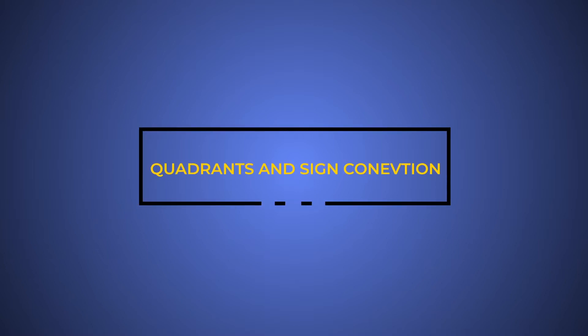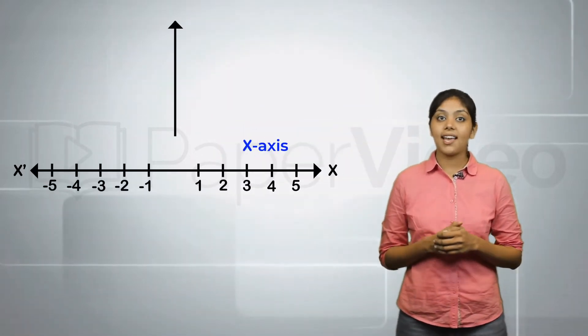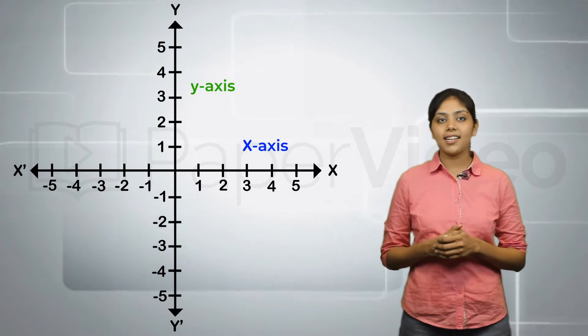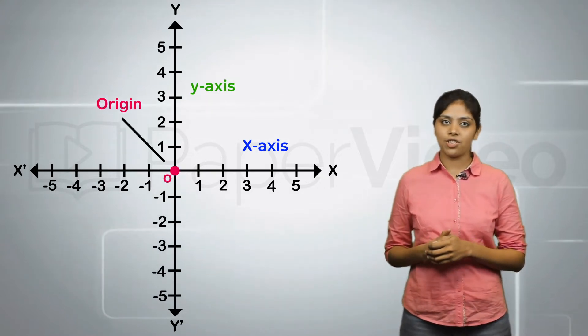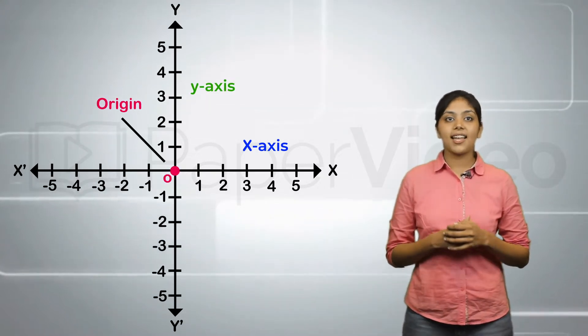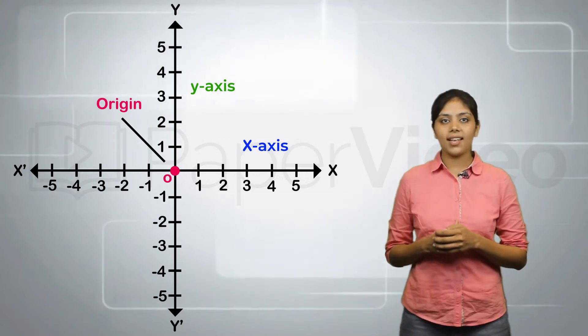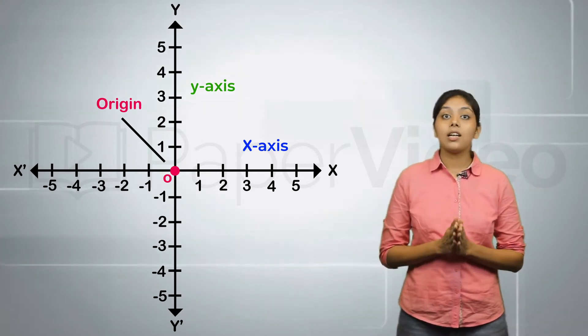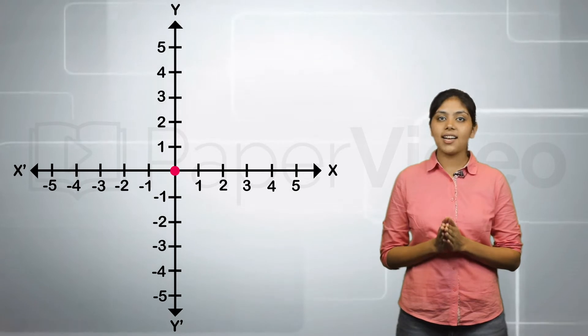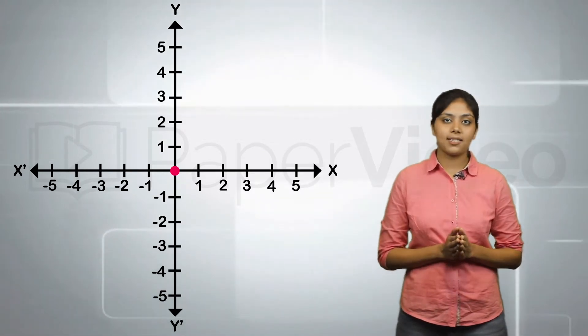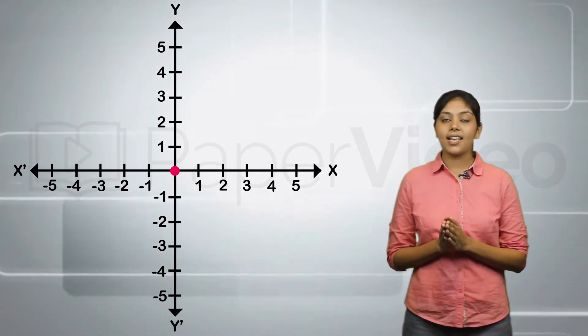Quadrants and Sign Convention. As we know that a Cartesian plane consists of two mutually perpendicular number lines, i.e., the x-axis and the y-axis, intersecting each other at the origin. The x-axis and the y-axis together are known as the coordinate axis. The coordinate axis divides a Cartesian plane into four parts. Each part is known as a quadrant.